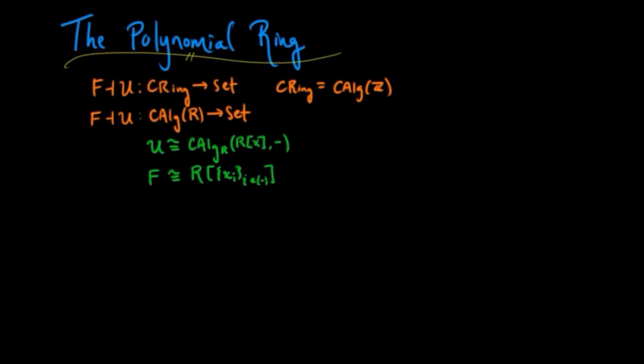For example, if we have a set with three elements X, Y, and Z, the free functor from the category of sets to commutative algebras over R will be the polynomial ring with three variables.